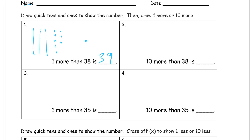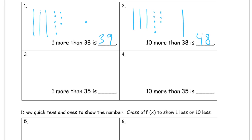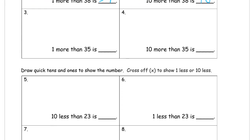Ten more than 38 — so first we need to draw 38: ten, twenty, thirty, and one, two, three, four, five, six, seven, eight. And here's ten more. Ten more than 38 — you could count it all right here: ten, twenty, thirty, forty, and that's still eight, so it's forty-eight. Or you could count it up one more at a time until you get ten more — use your fingers, keep track.